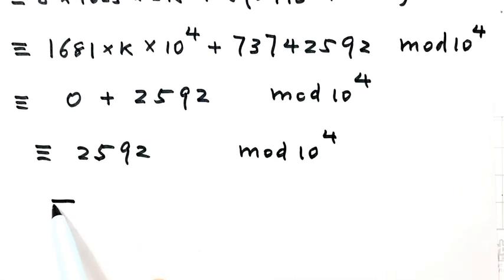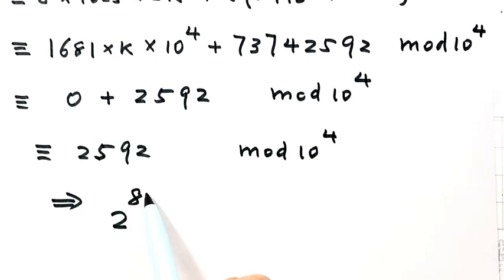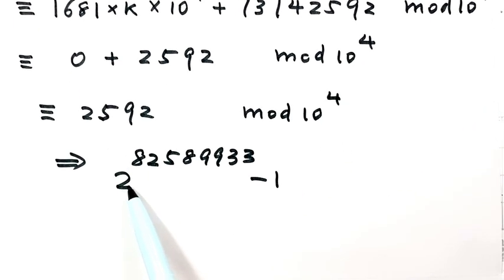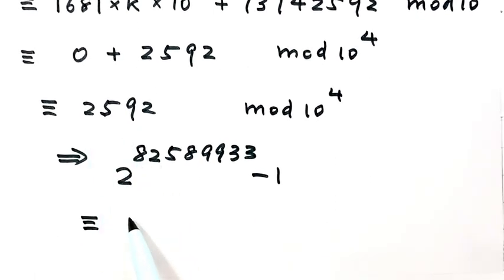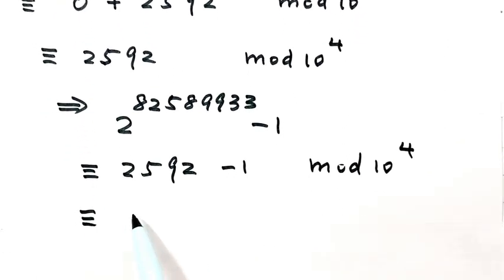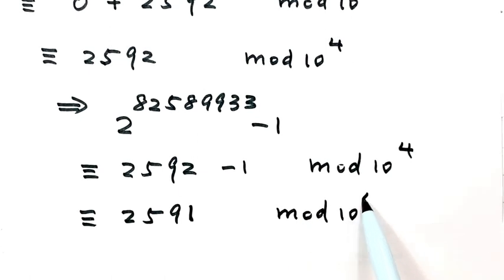Now let's go back to the original question: what are the last four digits of 2 to the power of 82,589,933 minus 1? Based on our result, for the first part the remainder is 2,592. So 2,592 minus 1, divided by 10 to the power of 4, gives remainder 2,591. Therefore, the last four digits of the largest known prime number are 2,591.